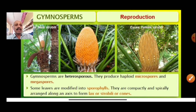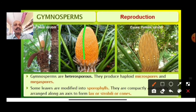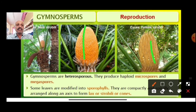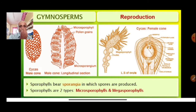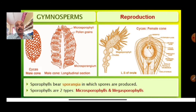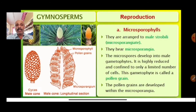The compactly spirally arranged sporophylls form a cone, also called a strobilus or strobila, and sometimes called a lax. These sporophylls bear the sporangia in which spores are produced. There are two kinds: microsporophylls, which are arranged on the male strobilus, and megasporophylls.